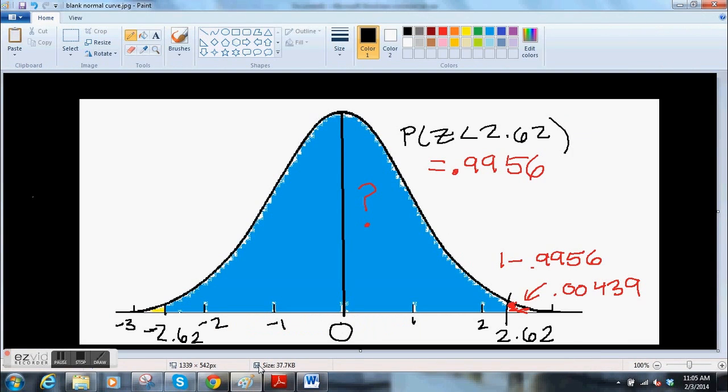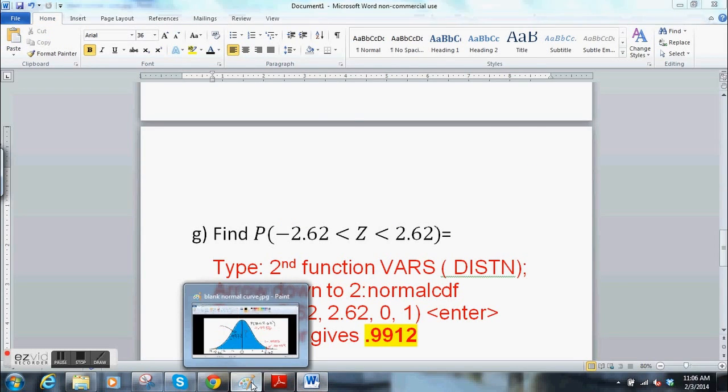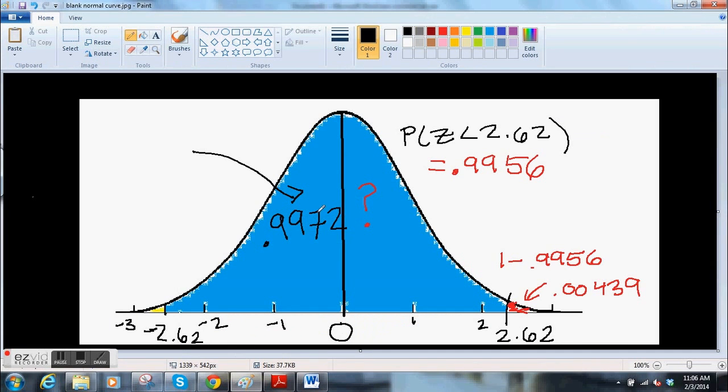And again, you go to a picture, you're saying that area is 0.9912. This is what I deal with when I'm grading tests.